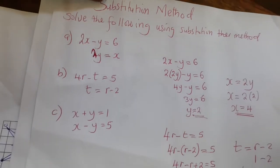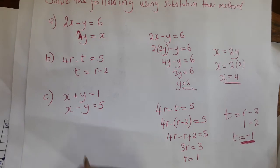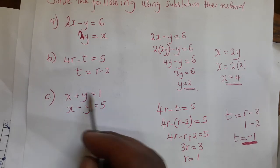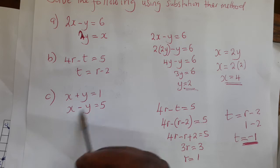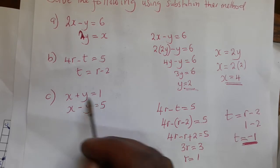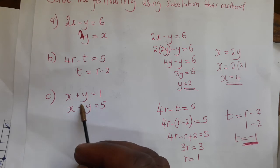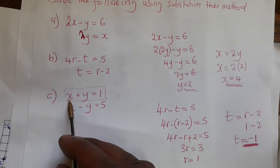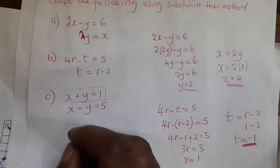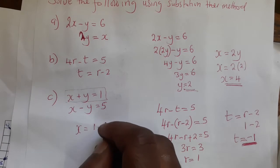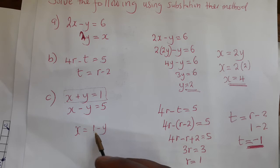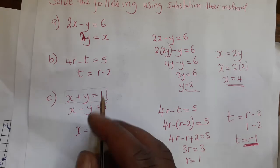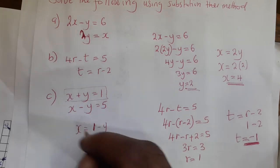Now the third problem. This is also very simple. In this case, you need to make one of the variables the subject of the formula yourself when using the substitution method. So from the first equation, we make x the subject: x equals 1 minus y.